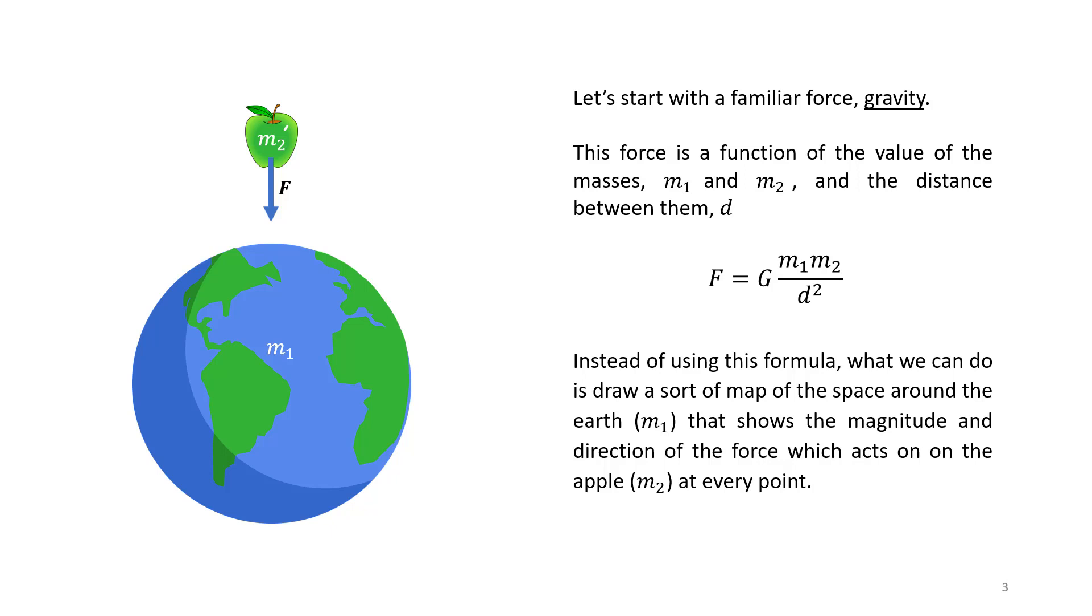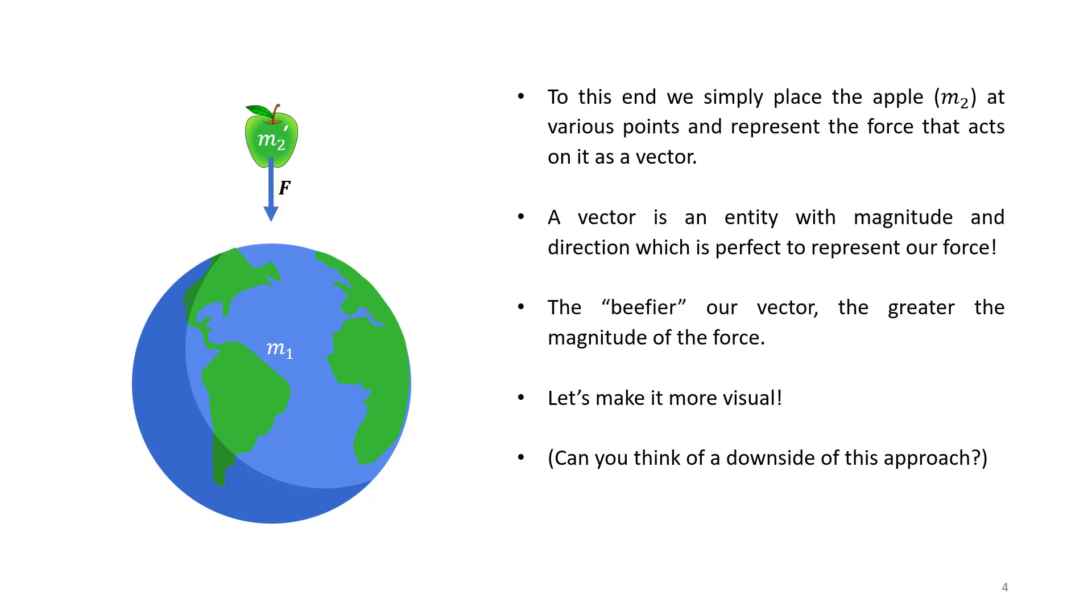However, instead of using this formula, we could create a map around the earth which tells us what force will act on our apple at various points in space. We can use a vector to represent the force, since this entity has both a magnitude, which tells us how strong the force will be, and a direction, which will tell us in which direction the apple will move.